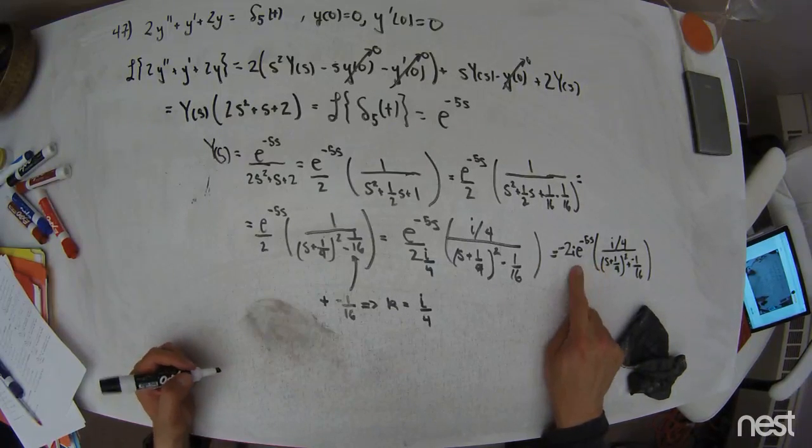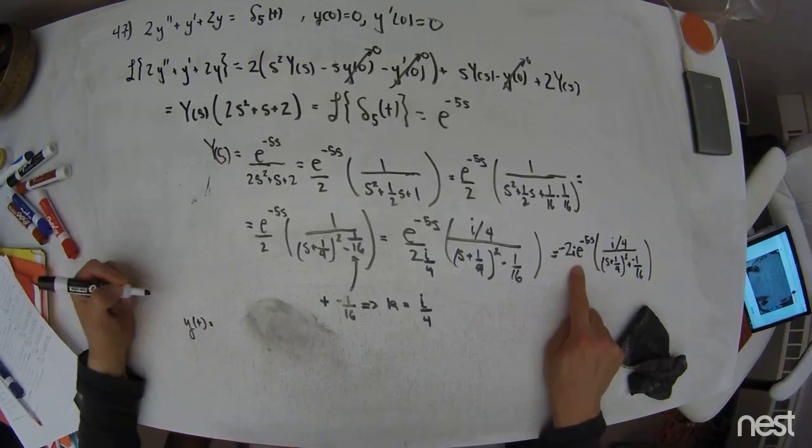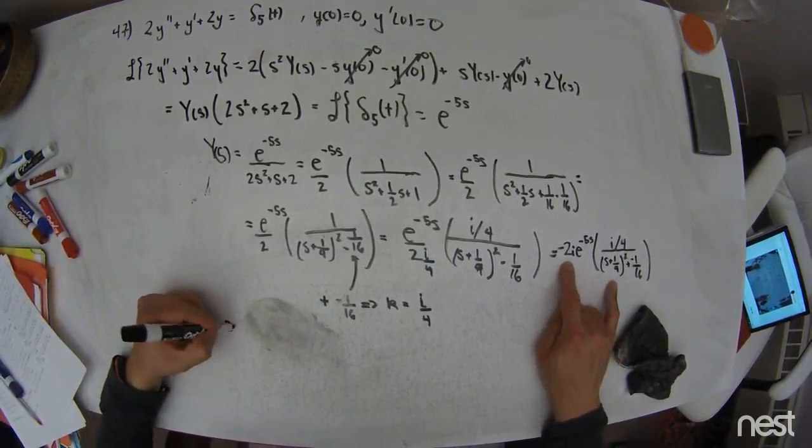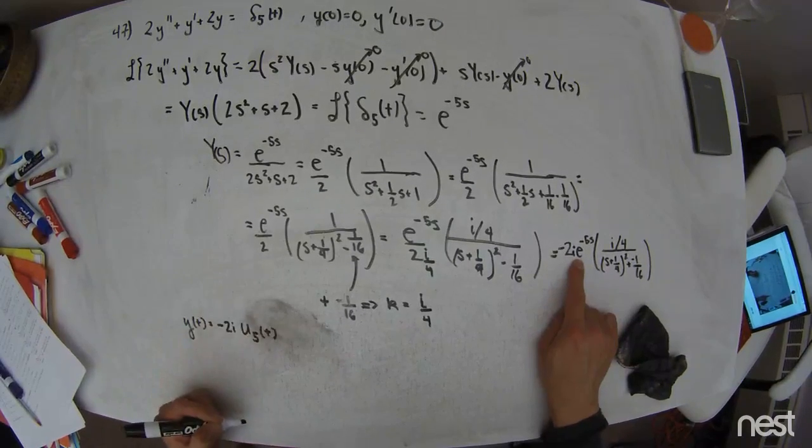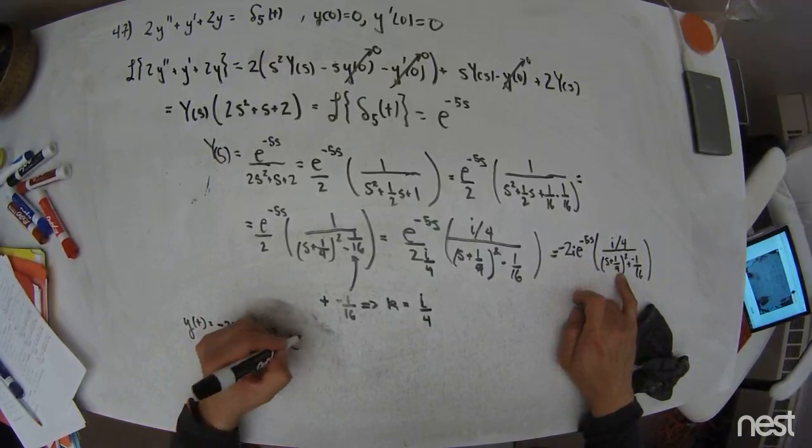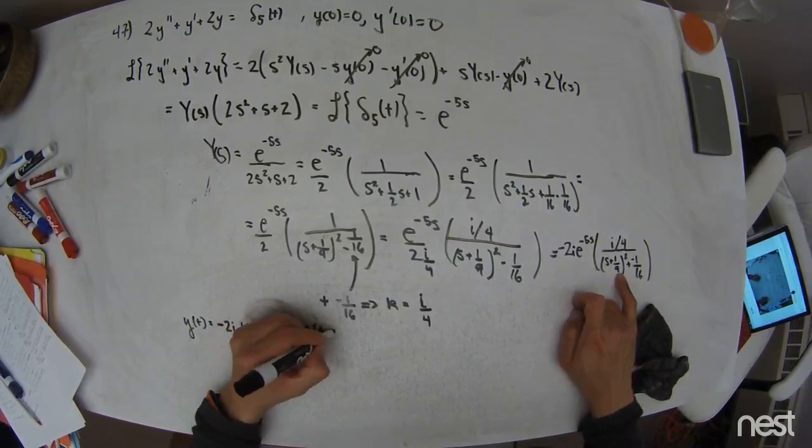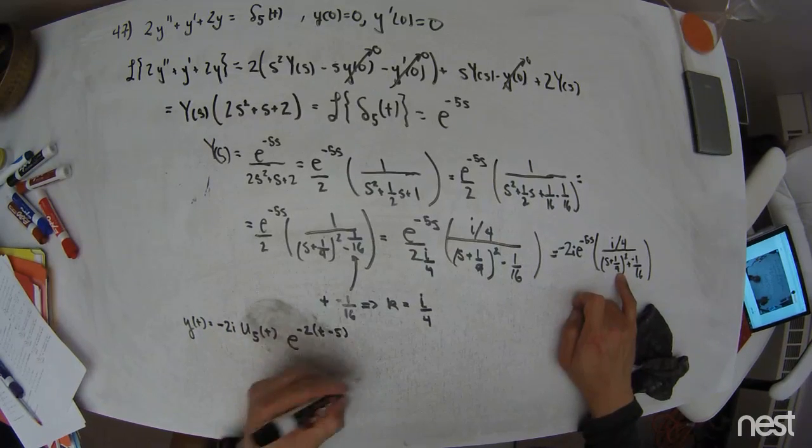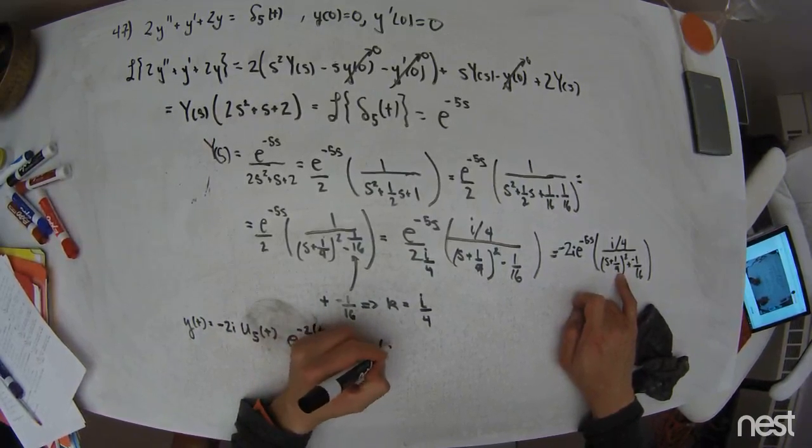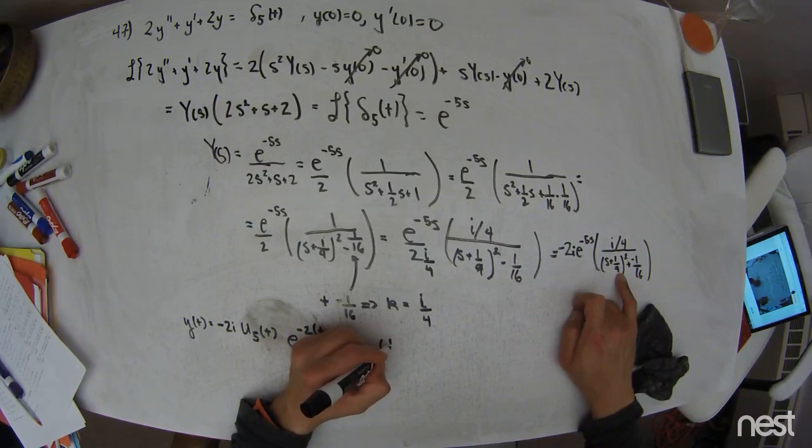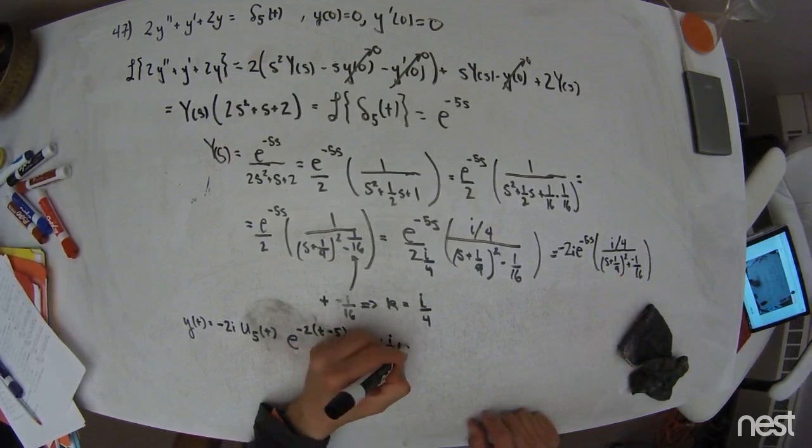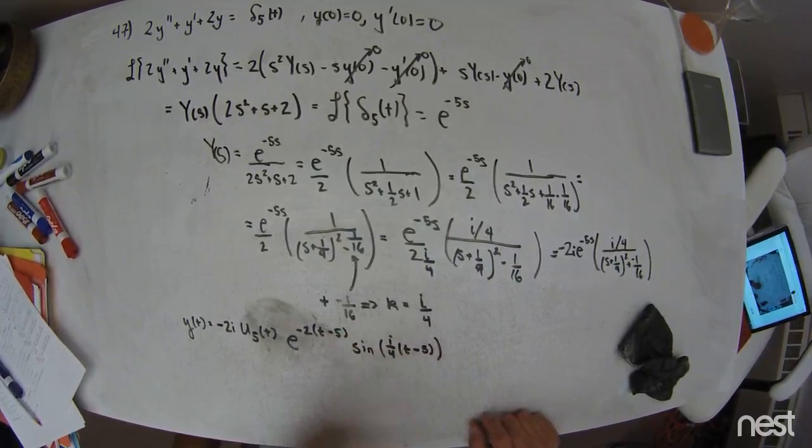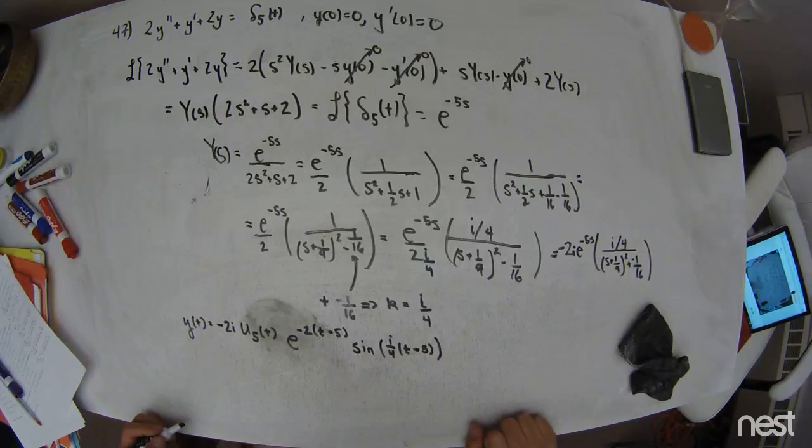So let's see. This is now ready for inverse transformation. I look at table entry number 5. Table entry number 5 tells me that the presence of an exponential means a time delay of 5 seconds here, according to its exponent. And then this becomes e to the negative 2t minus 5 seconds times sine of 1i over 4 times t minus 5 seconds. Right?